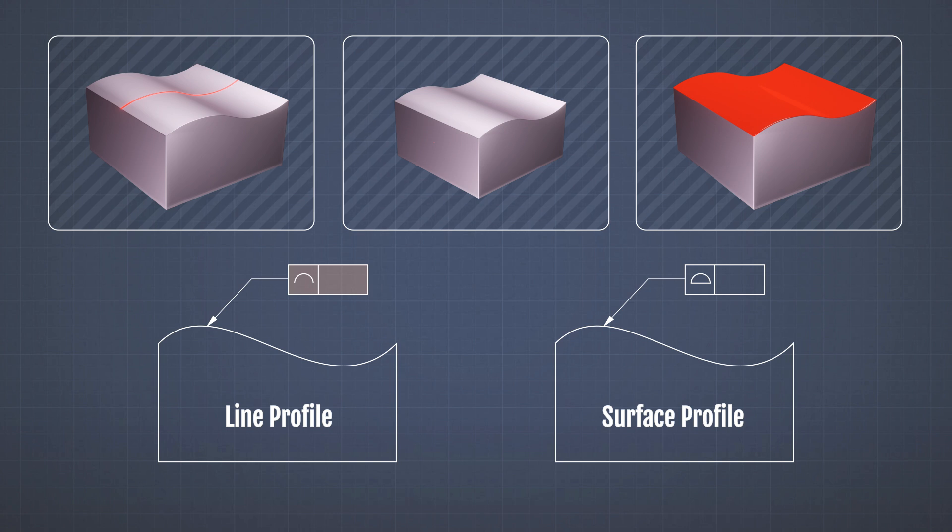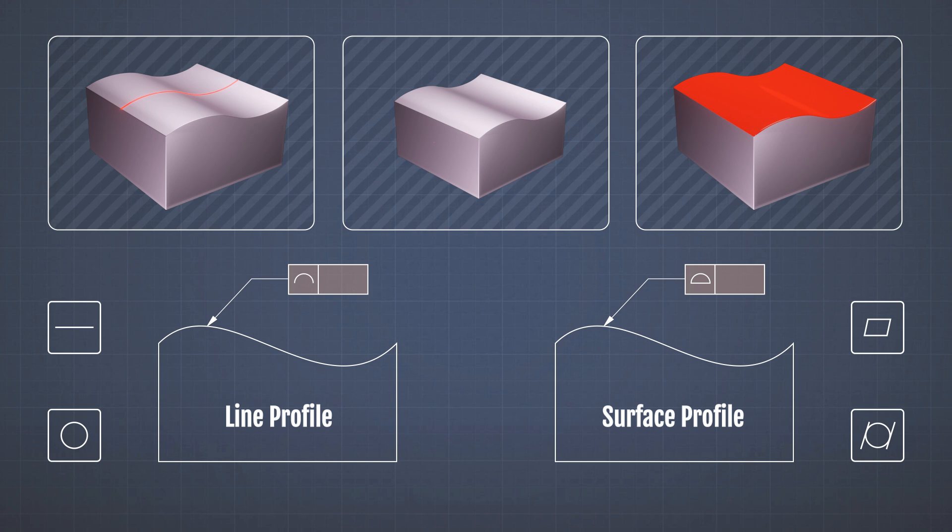The same as the line profile, but the flipped U sign is closed. And the difference between these two is just like the difference between the straightness and flatness, or circularity and cylindricity. One is tolerating only a line, and one is tolerating the whole surface.